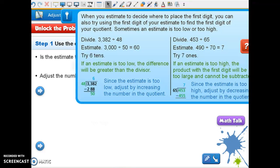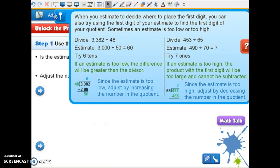Okay, we're on lesson 2.8. We're going to talk a little bit about those two top boxes at the top of the page: how can you adjust the quotient if your estimate is too high? So we're going to look at that when you estimate to decide where to place the first digit.